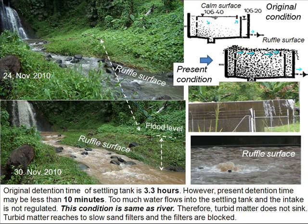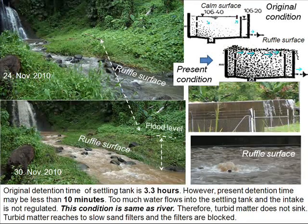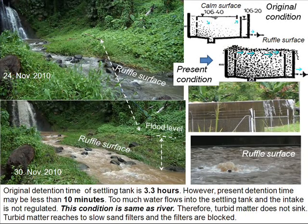The original detention time of the settling tank was 3.3 hours. However, the present detention time may be less than 10 minutes. Too much water flows into the settling tank and the intake is not regulated. This condition is the same as a river — therefore, turbid matter does not sink. Turbid matter reaches the slow sand filters and filter work is blocked.